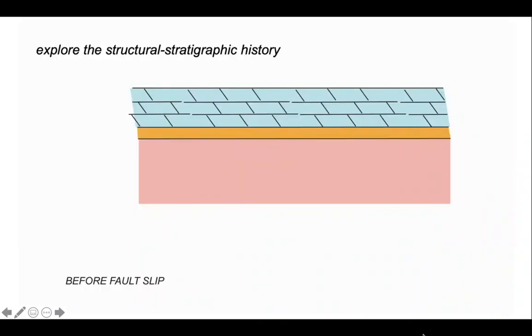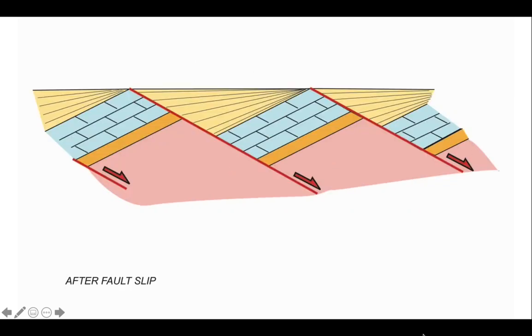Let's start off by some simple cartoons to establish a framework. Here we have a succession of rocks before any fault slip. The faults are going to be planar and rotational and they move like that, and as they've moved these yellow rocks have been deposited on top.